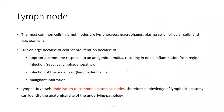The most common cells seen in lymph nodes are lymphocytes, macrophages, plasma cells, follicular cells, and reticular cells. Lymph nodes enlarge because of cellular proliferation — an appropriate immune response to antigenic stimulus — resulting in nodal inflammation from regional infection, infection of the lymph node itself (lymphadenitis), or malignant infiltration.